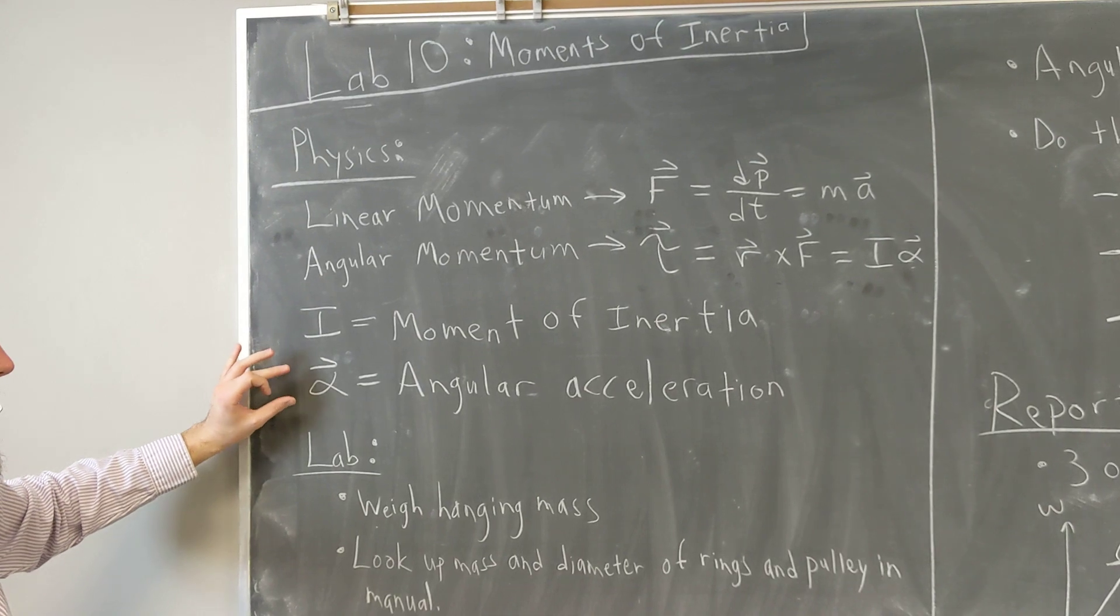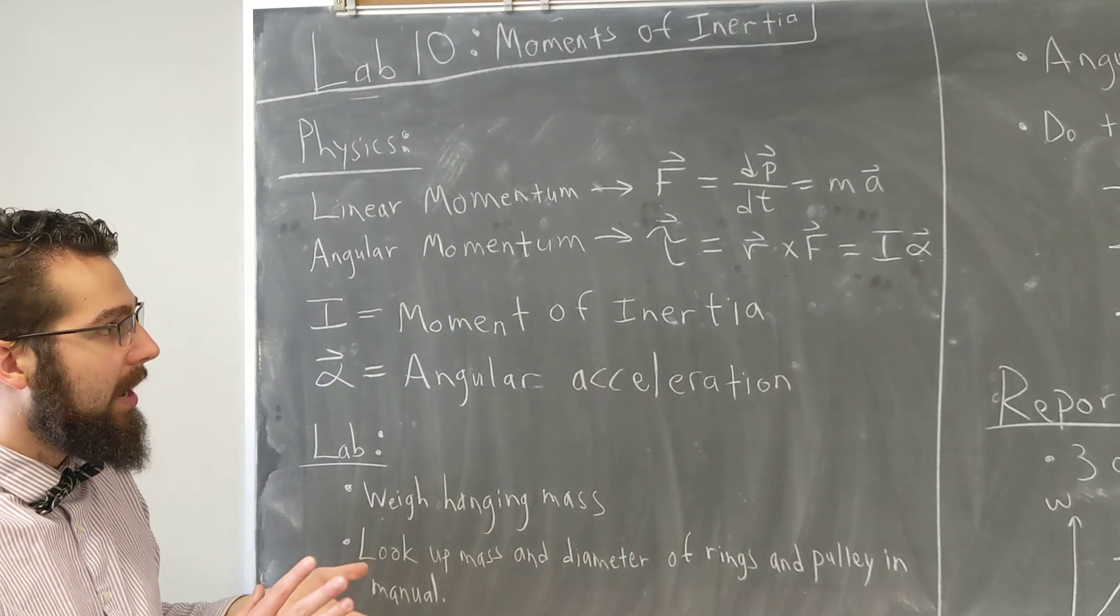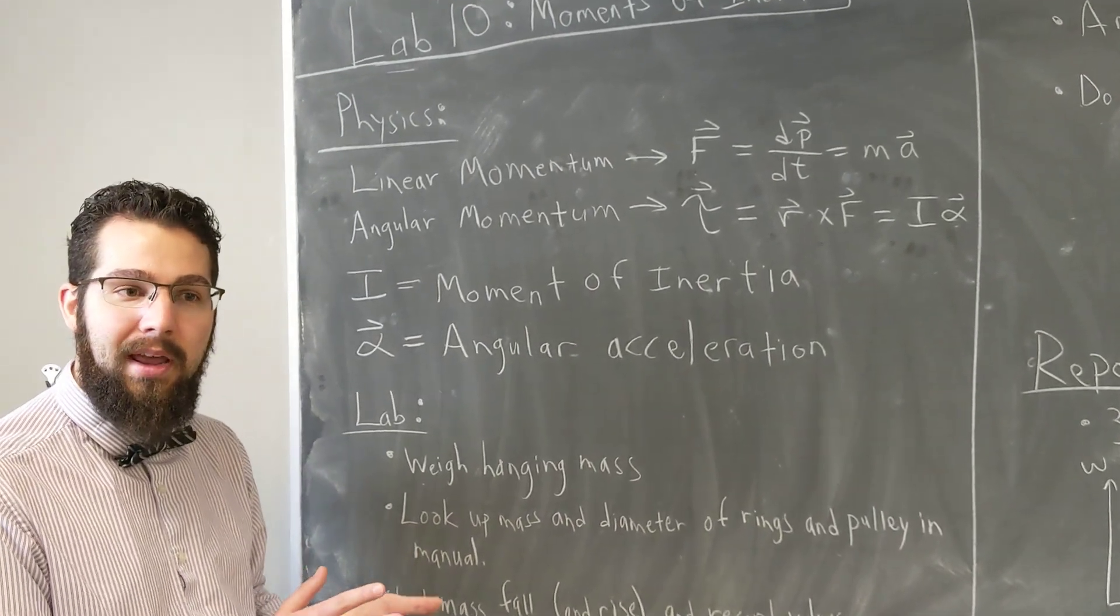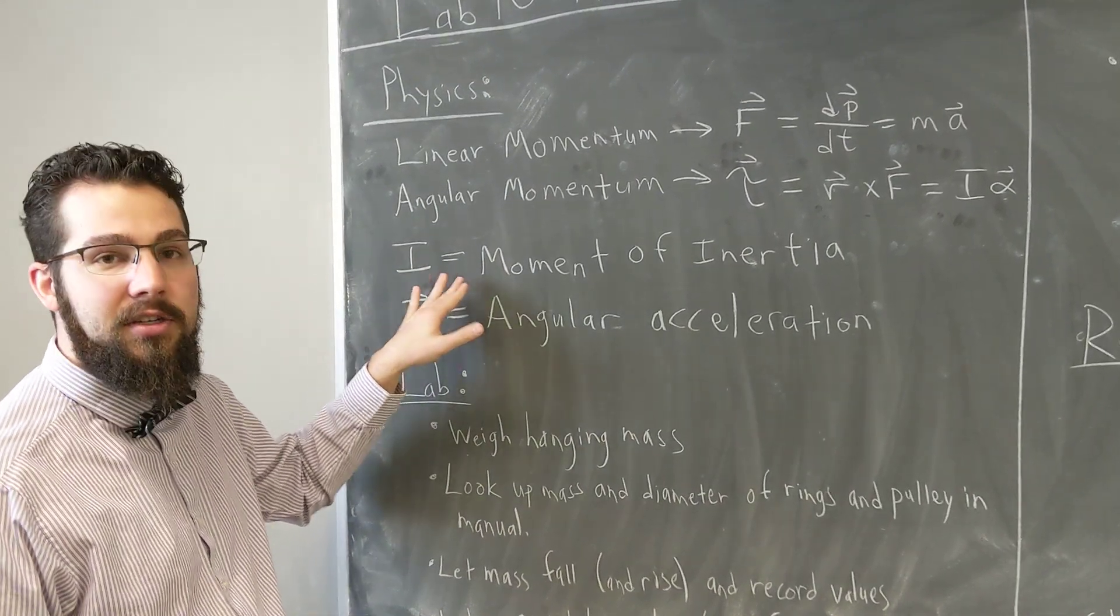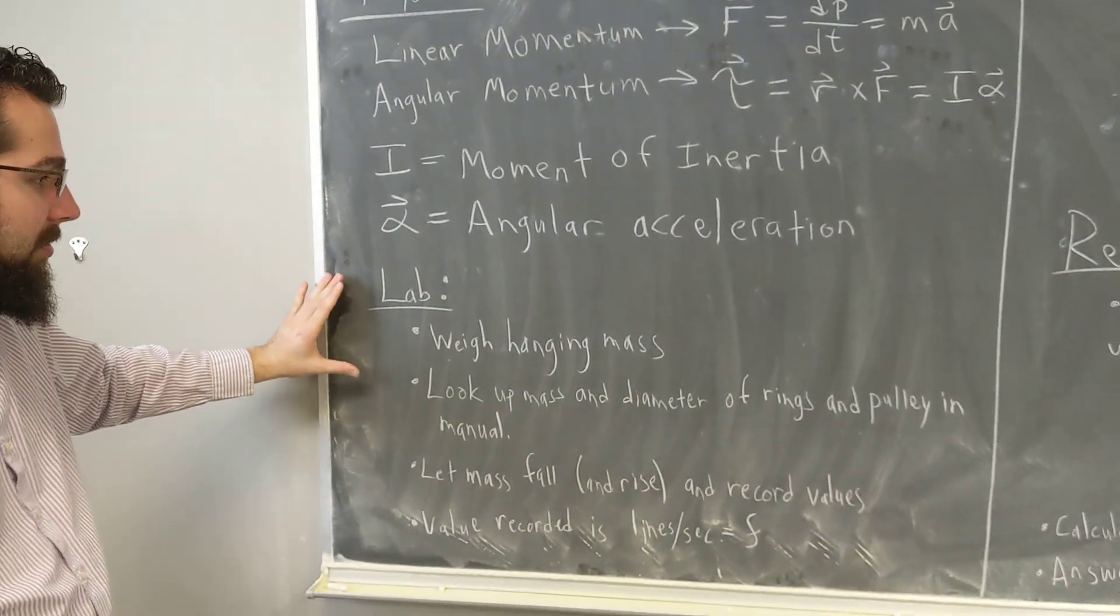I is our moment of inertia, alpha is our angular acceleration. I depends on shape, size, and weight. The lovely traditional example is a skater spinning with their arms out. As they pull their arms in, their moment of inertia changes and they start spinning faster.